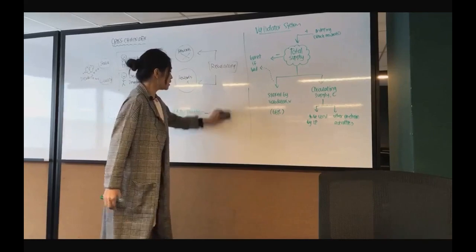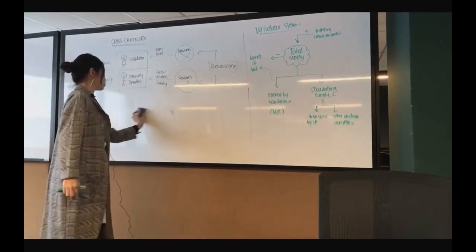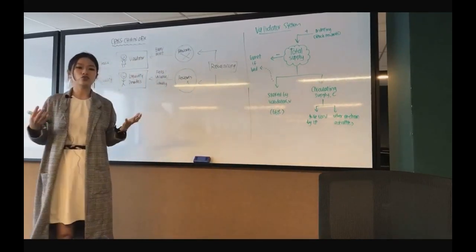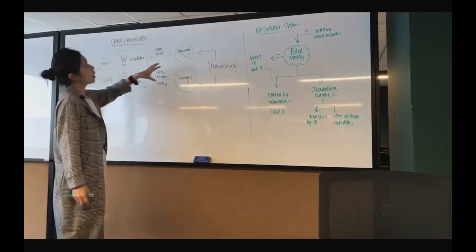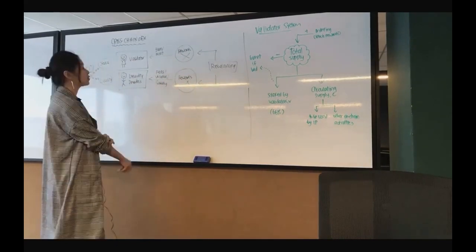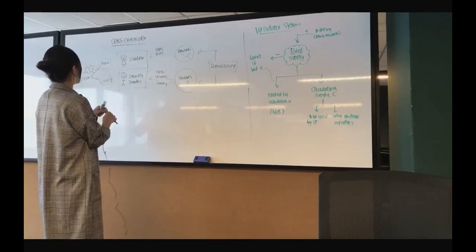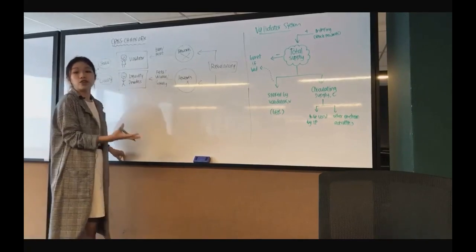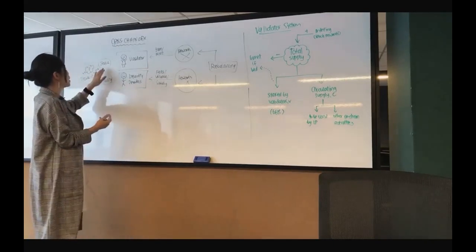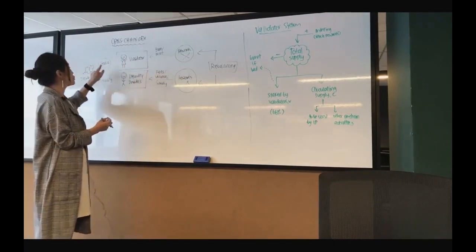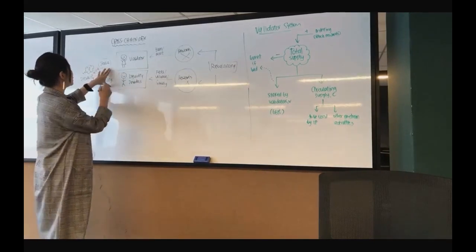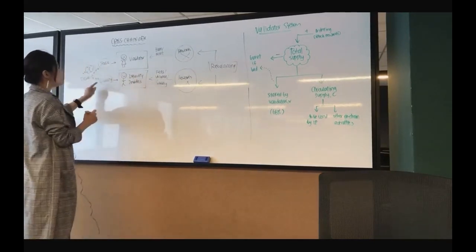In economics, it's about making decisions — understanding how people behave and what we can do to affect behavior. That's where rewards, or incentives, come in. You have to decide between being a validator or a liquidity provider. Nothing is free: if you're a validator, you stake tokens; if you're a liquidity provider, you provide liquidity — a different kind of staking. So the decision is: do I stake or do I provide liquidity?